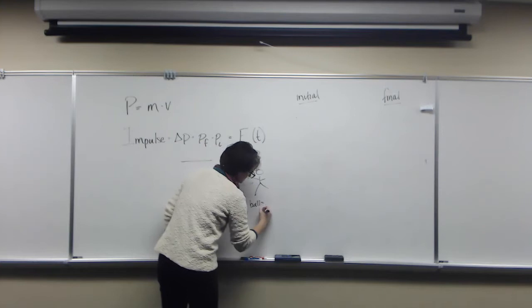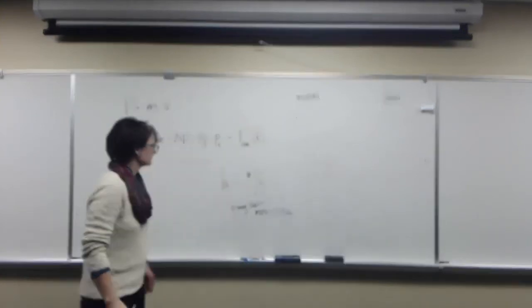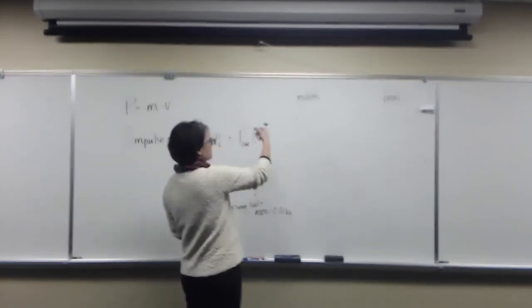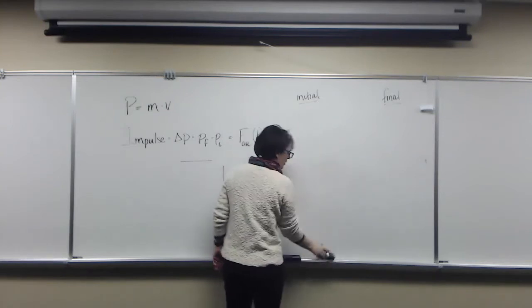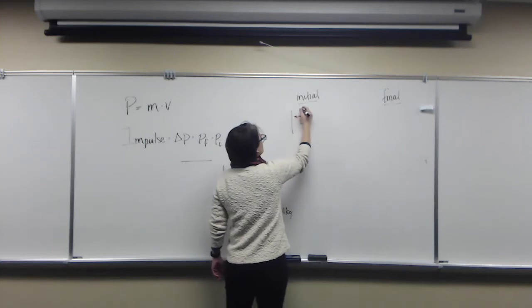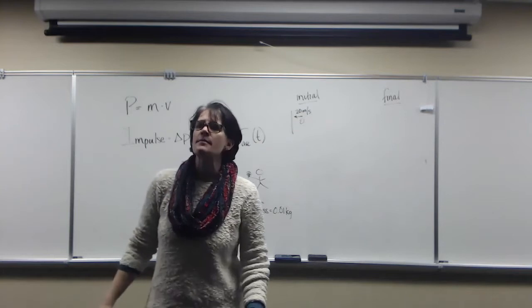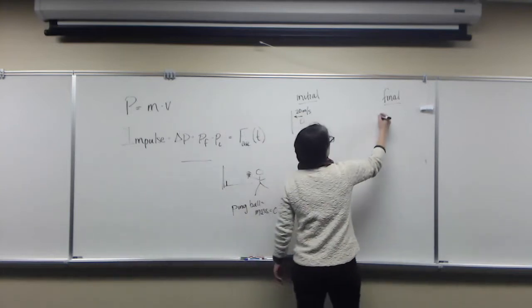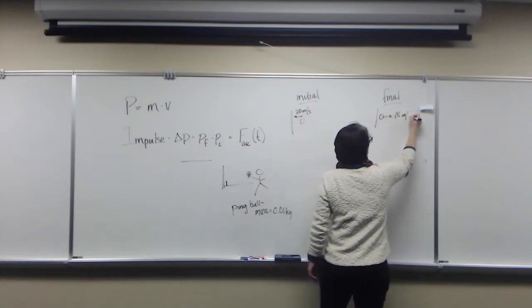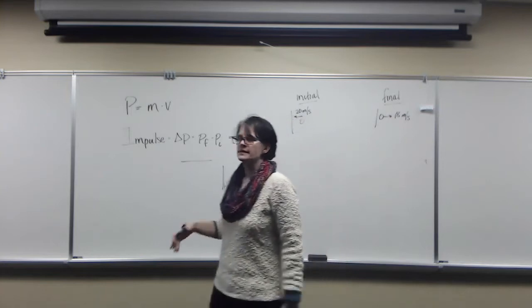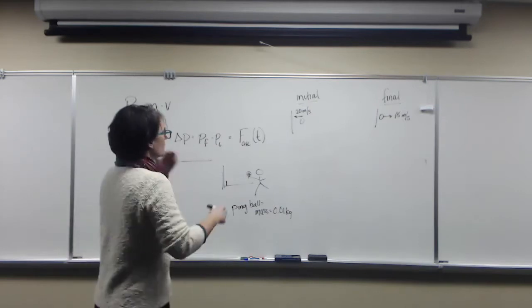The ping pong ball has a mass equal to 0.01 kilograms, so 10 grams. You hit the ball, so here's the wall. The ball hits the wall moving at 20 meters per second. It loses some energy in that collision, so it goes back at 18 meters per second. What force does it experience by the wall?